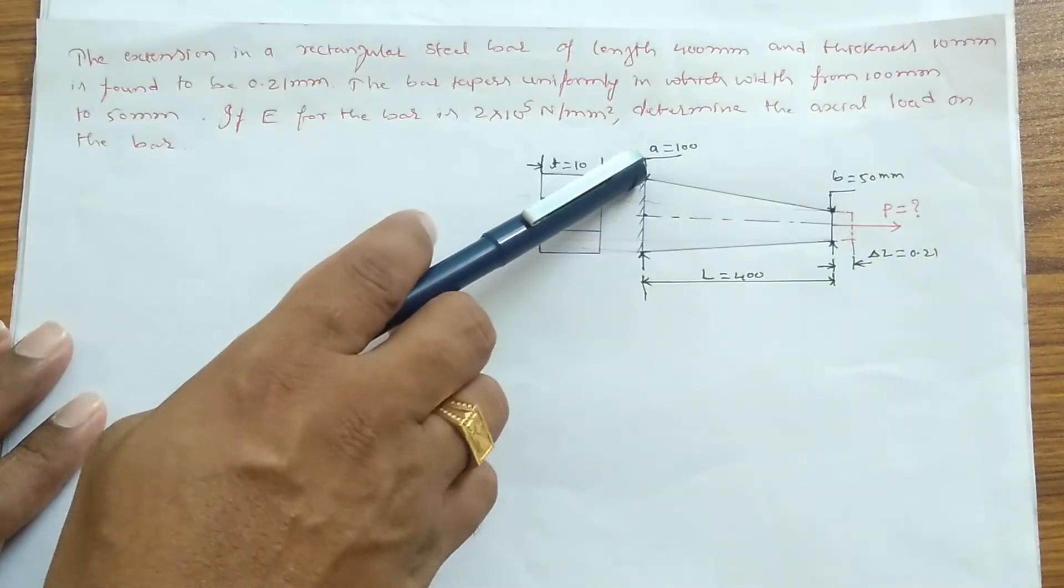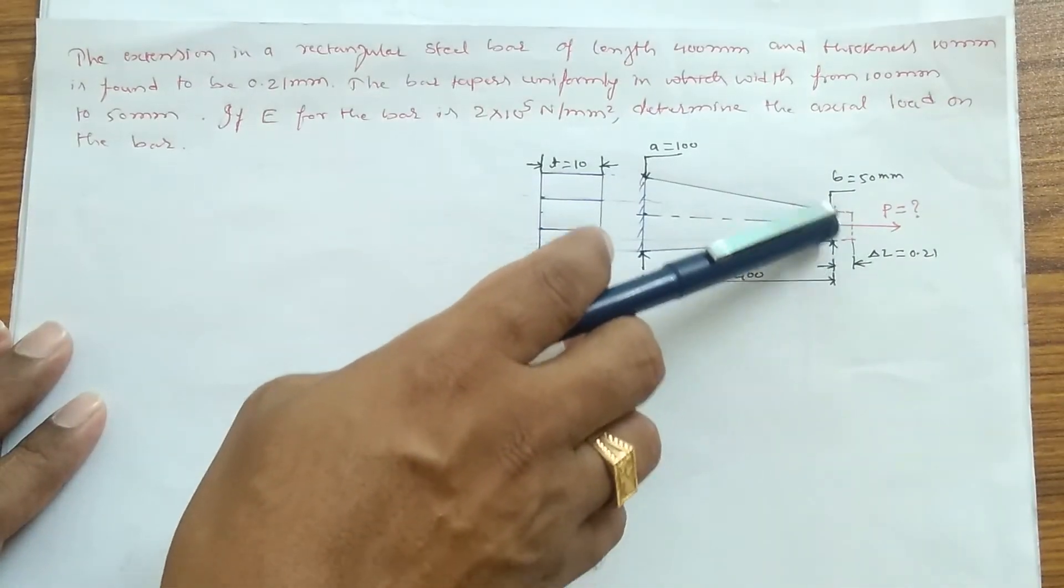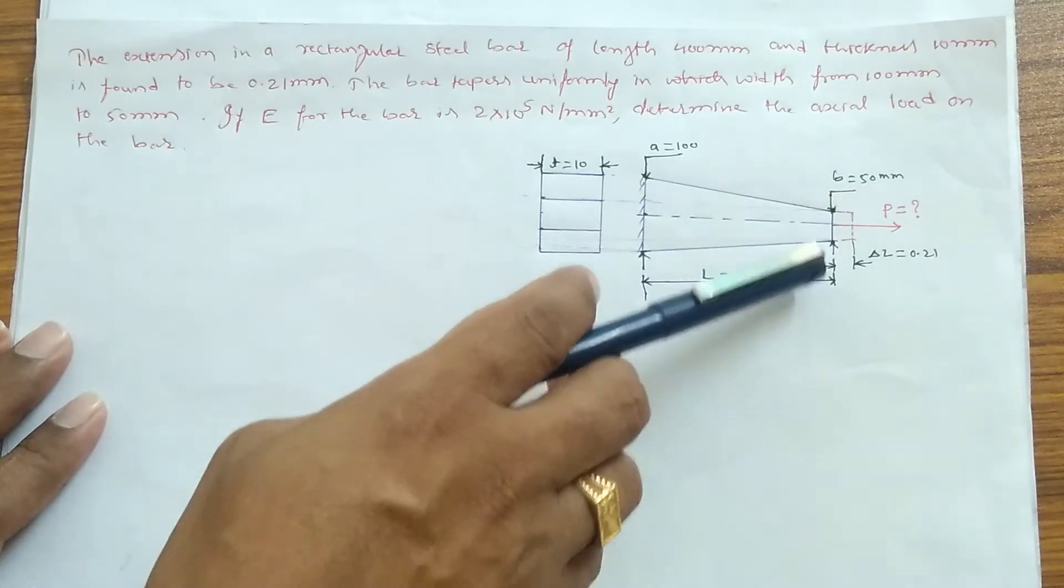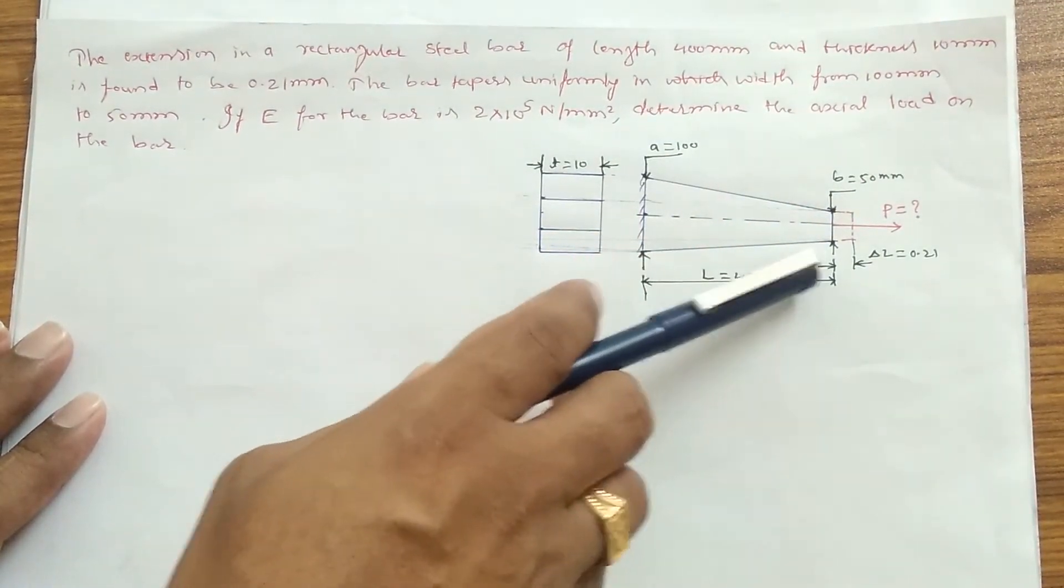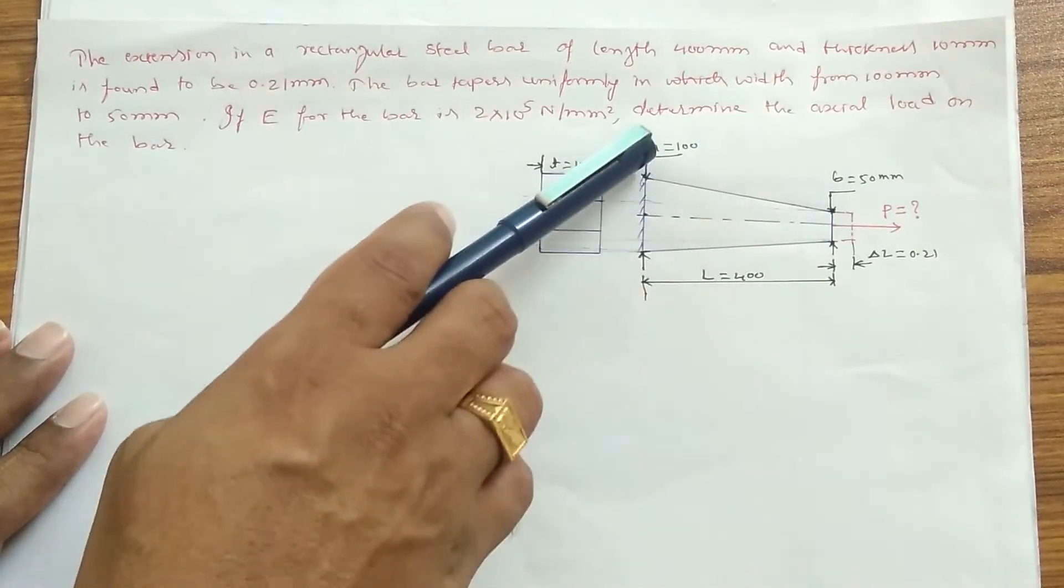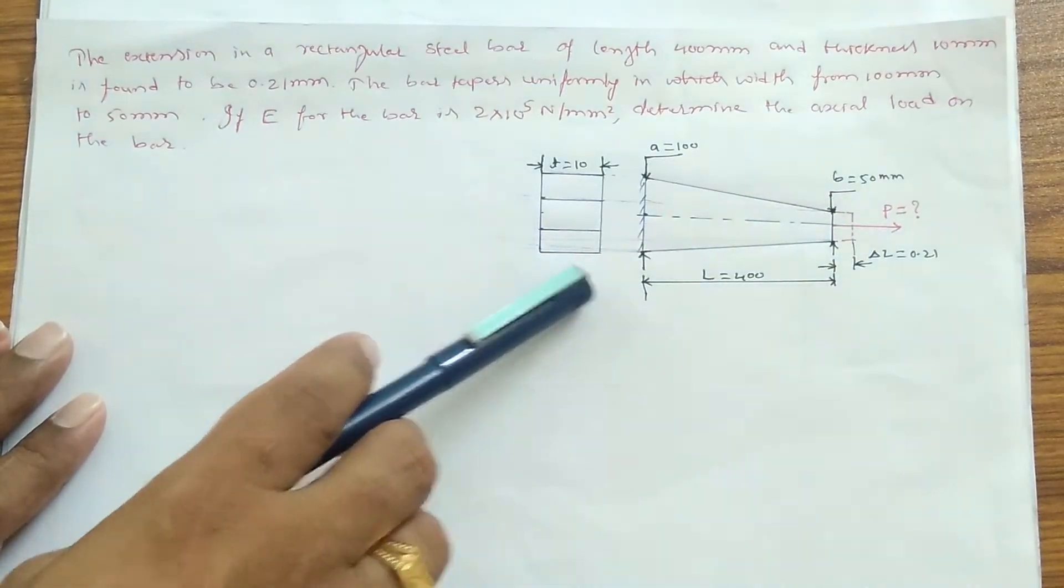So it tapers from 100 mm width to 50 mm width. You can see here in the diagram. This is what taper means—it tapered from 100 mm width to the 50 mm width.